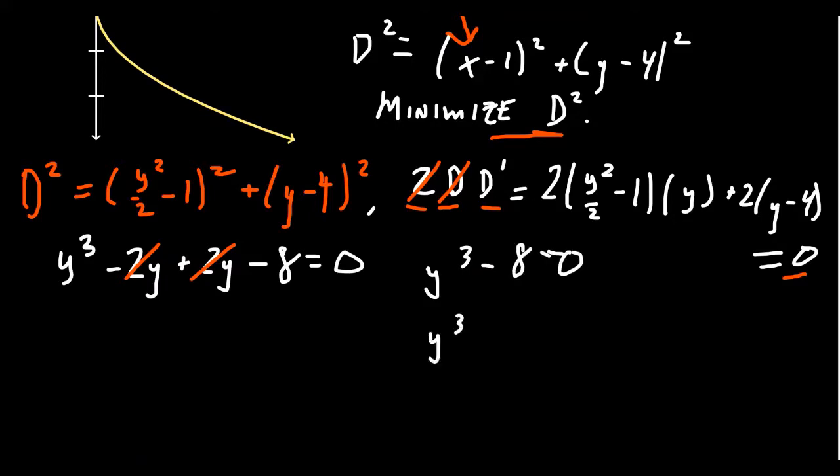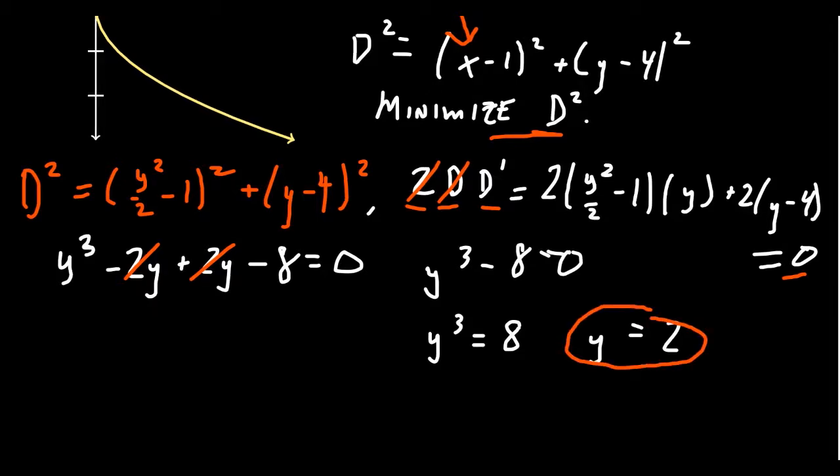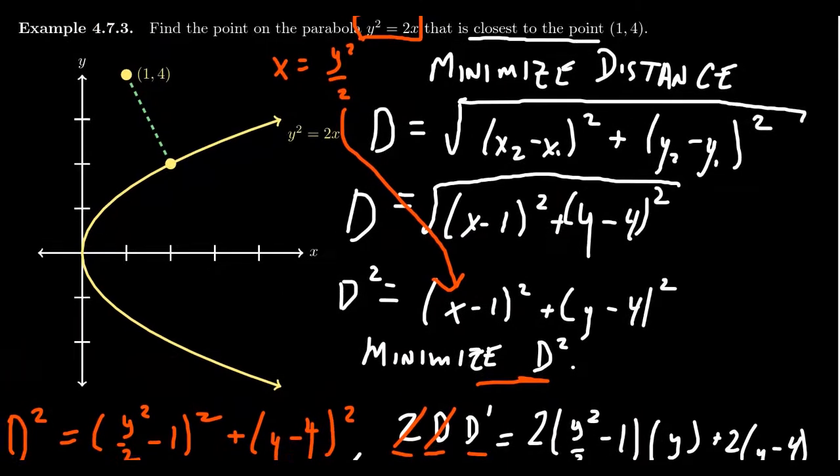Solving for y cubed, we get y cubed equals 8. And taking the cube root, we'll get y equals 2, the cube root of 8. Now, this is our critical number. And so there seems like high hopes that this will give us the closest point. And if we come back up to the picture we had before, y equals 2. Y equals 2 right here.